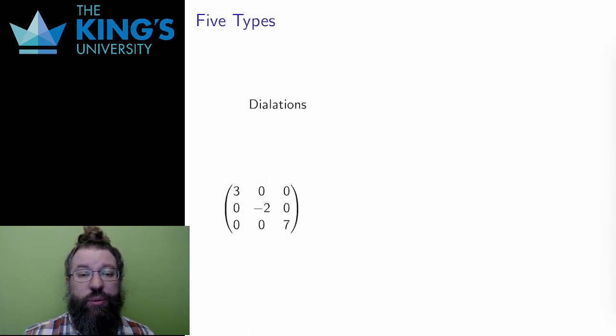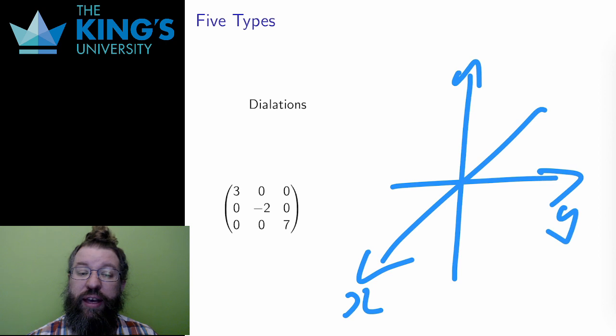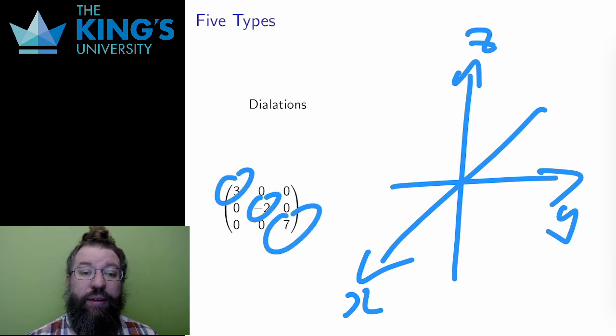Dilations are perhaps the easiest to extend. Instead of stretching in the x and y directions, I now stretch in the x, y, and z directions. This matrix stretches the x by 3, the y by negative 2, so that's with a flip, and the z by 7.